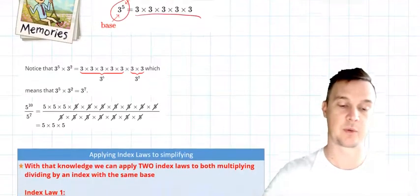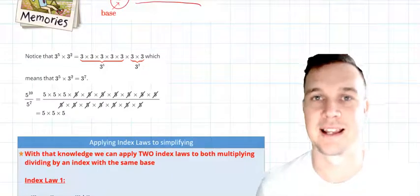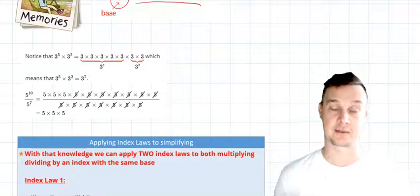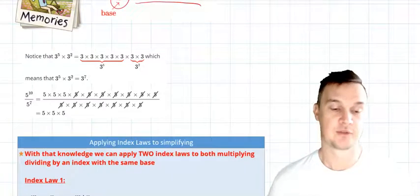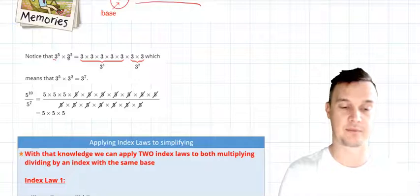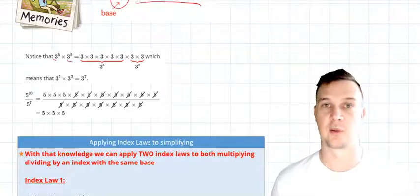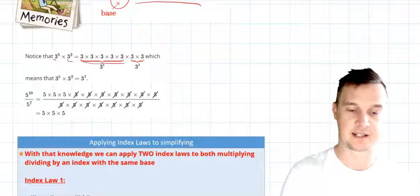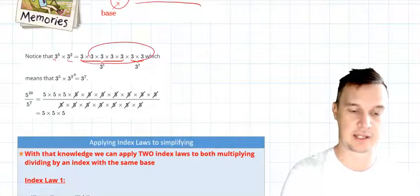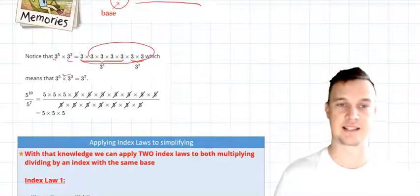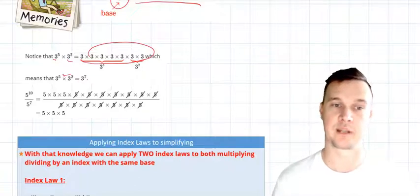A couple of things that when we're combining or simplifying our like terms or applying index laws, you'll notice that we have 3^5 times 3^2, and that effectively is saying that there is 8 there. What we do there is adding the two indexes together: 5 plus 2 equals 7.